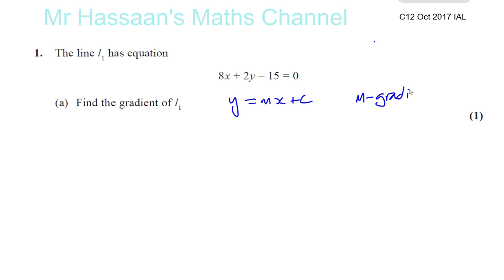So that's what we have to do in order to find the gradient of this line. So we've got to make this y the subject of the formula. So you start off with 8x plus 2y minus 15 equals 0. So first of all, I will keep the 2y on this side. I will subtract 8x and add 15 to both sides. So I'll have minus 8x plus 15. So 2y equals minus 8x plus 15. And then I'll divide both sides by 2.